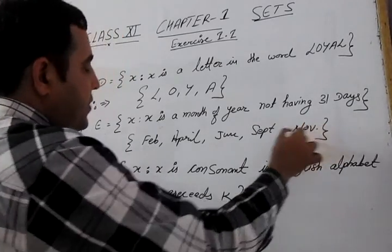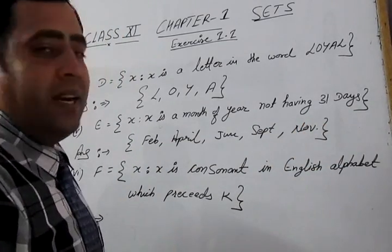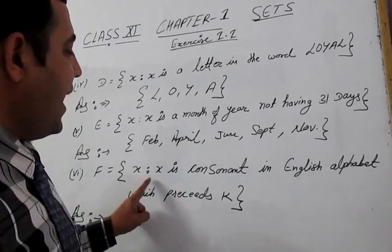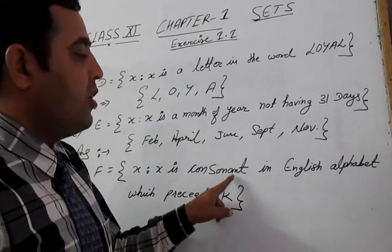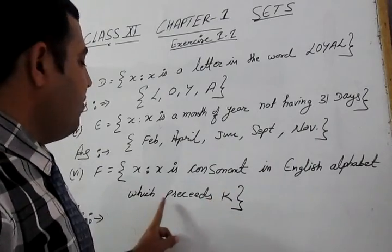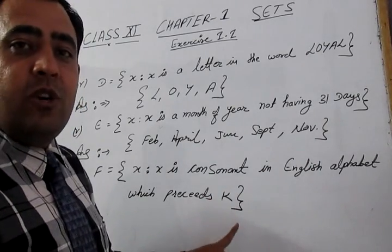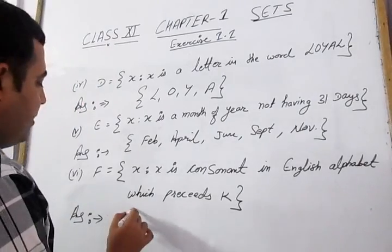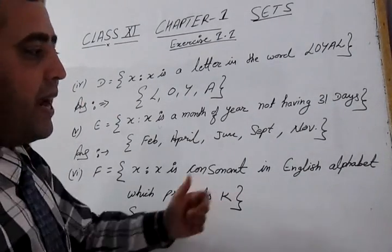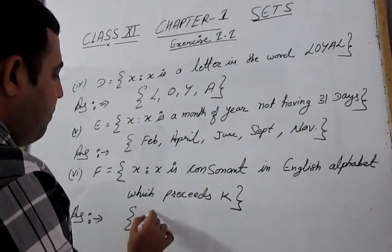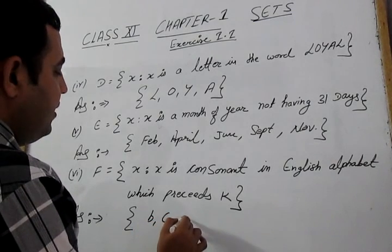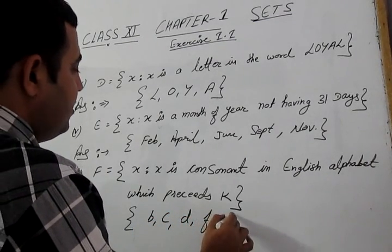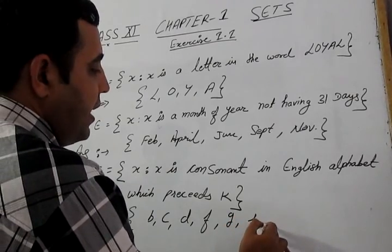Part F: x such that x is a consonant in the English alphabet which precedes K — meaning consonants that come before K. Those consonants are B, C, D, F, G, H, and J.